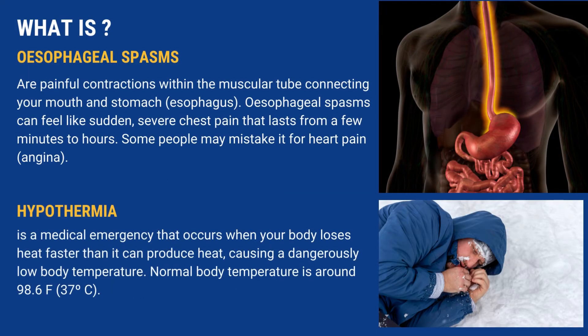Esophageal spasms are painful contractions within the muscular tube connecting your mouth and stomach — the esophagus. Esophageal spasms can feel like sudden, severe chest pain that lasts from a few minutes to hours. Some people may mistake it for heart pain, or angina. Hypothermia is a medical emergency that occurs when your body loses heat faster than it can produce heat, causing a dangerously low body temperature.